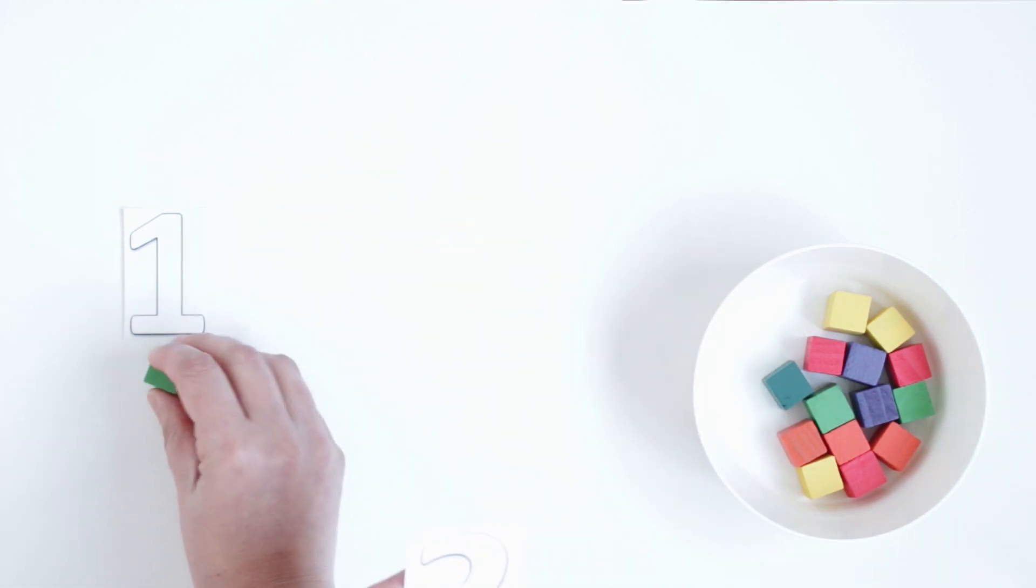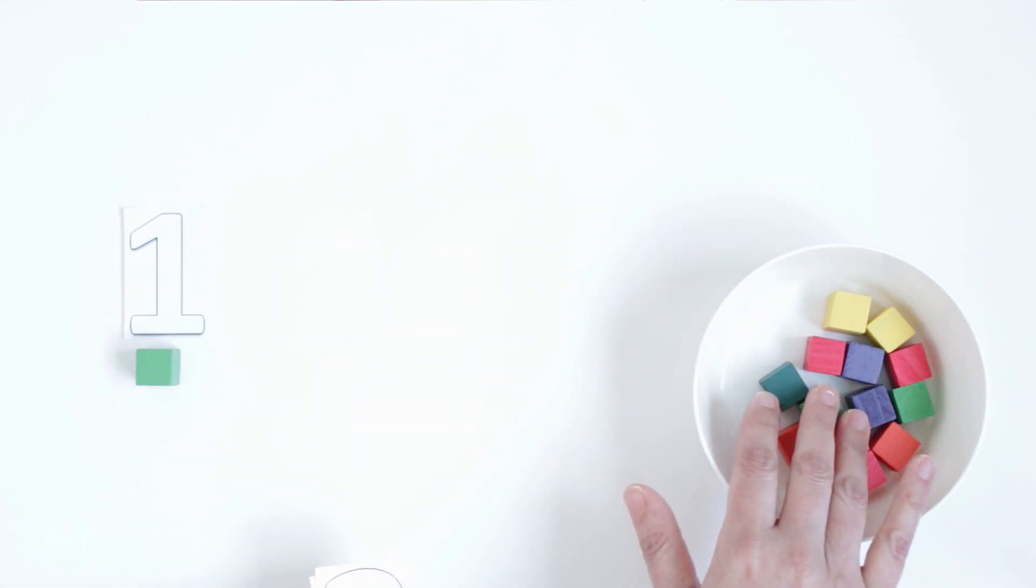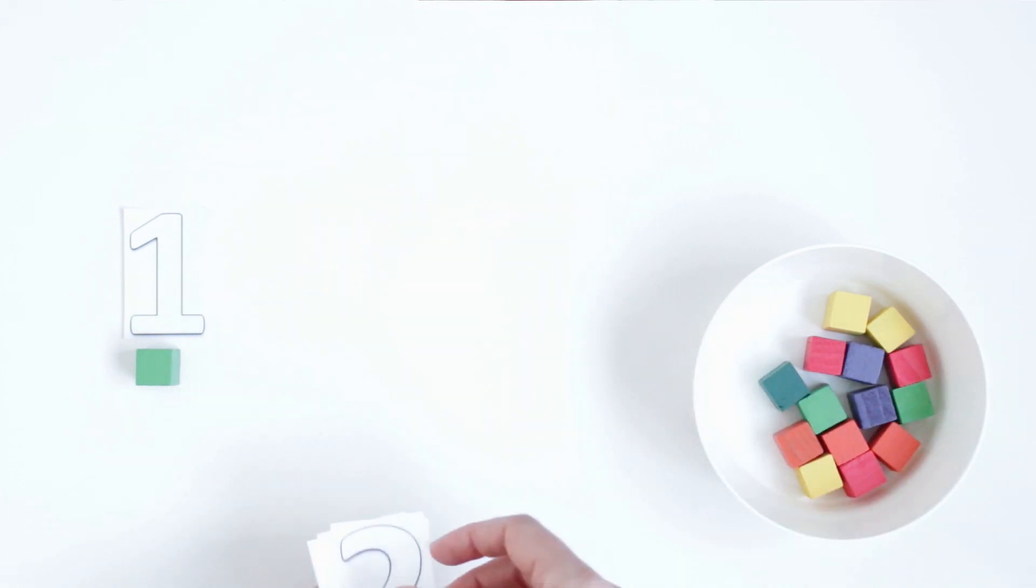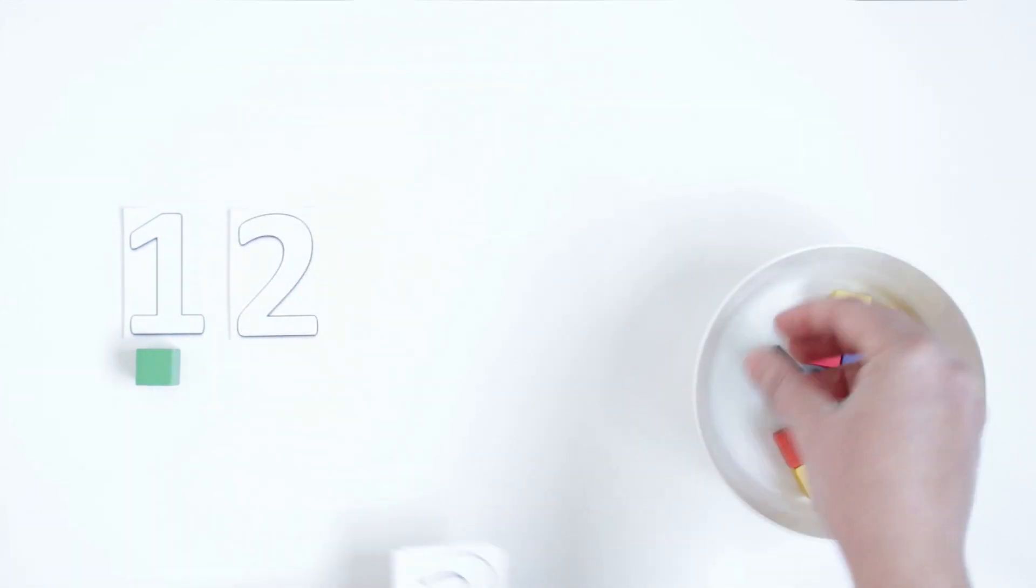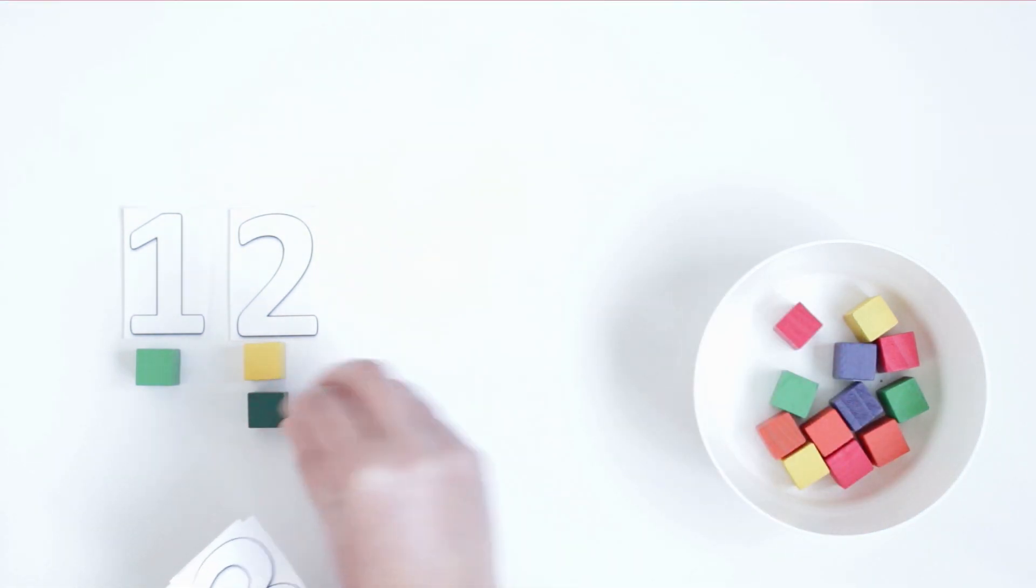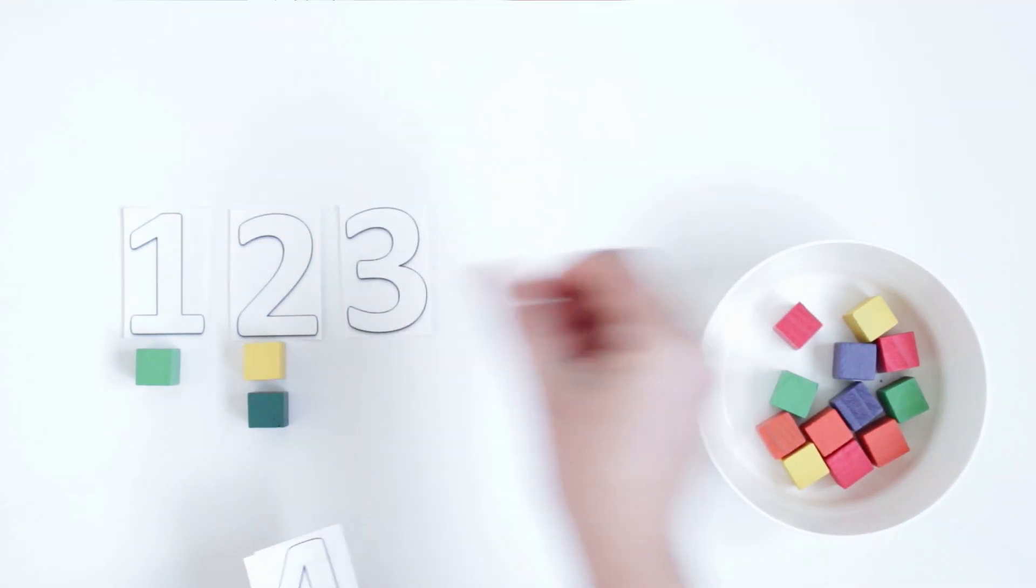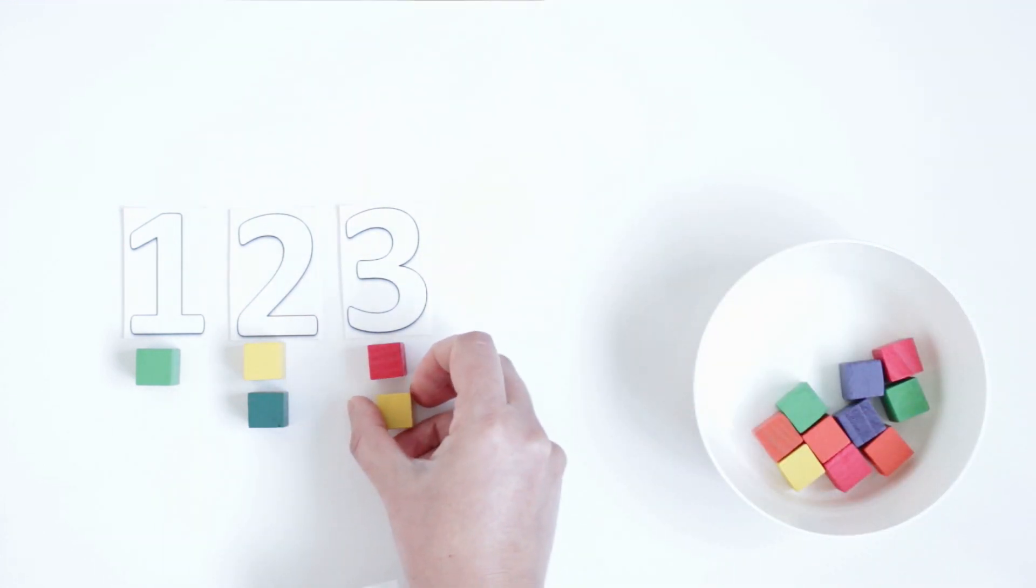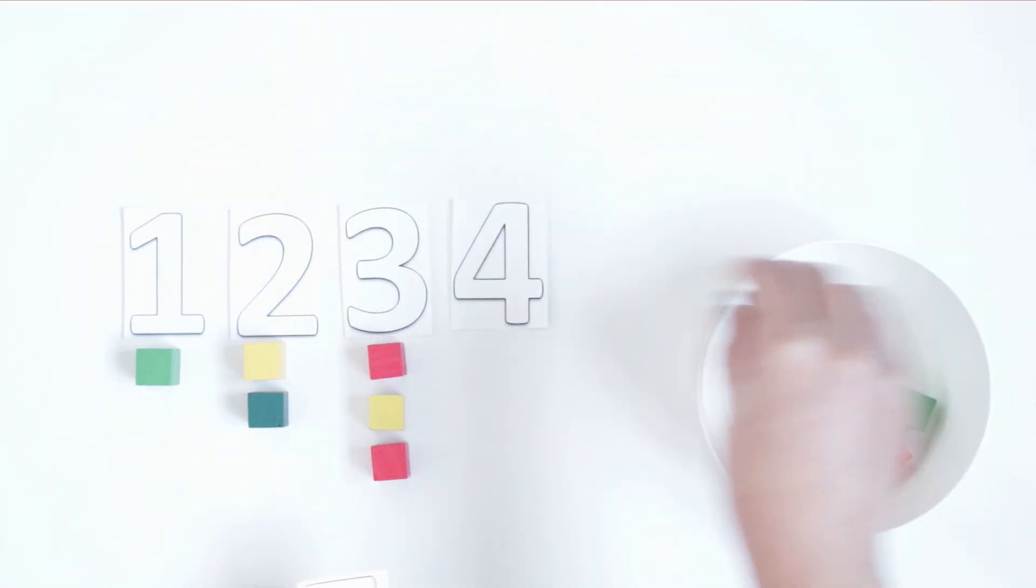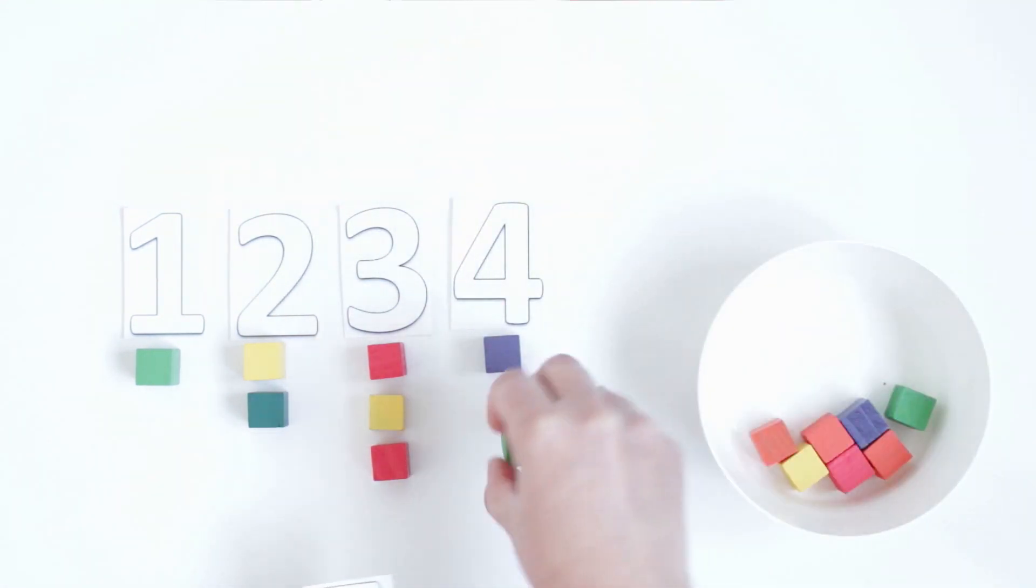Put just one block. The colors here I'm not doing any sorting because it doesn't matter for this activity. You can use any color. So two, two blocks. One, two. Three. One, two, three. Four. One, two, three, four. Five. One, two, three, four, and five.